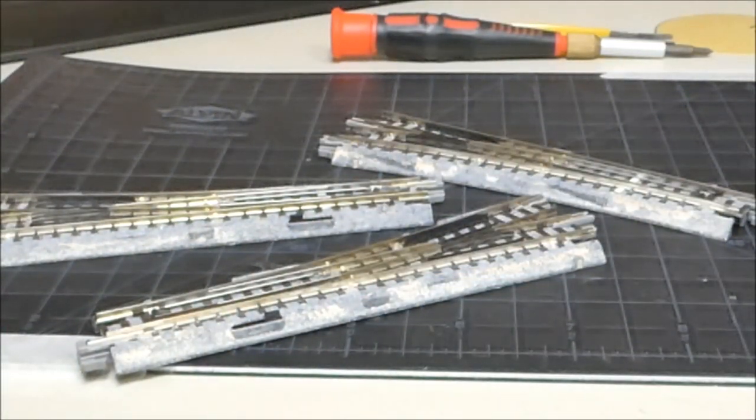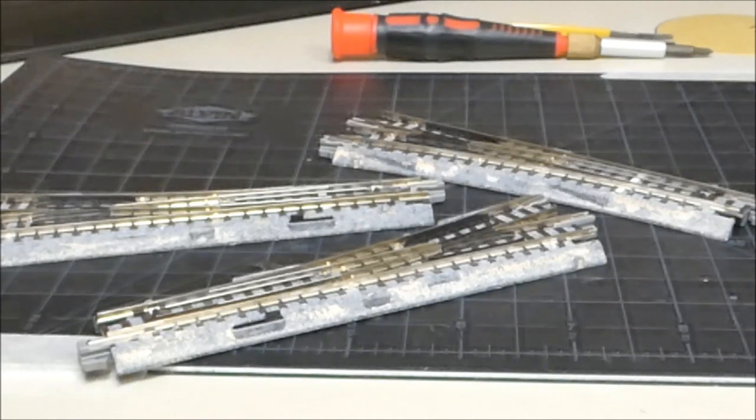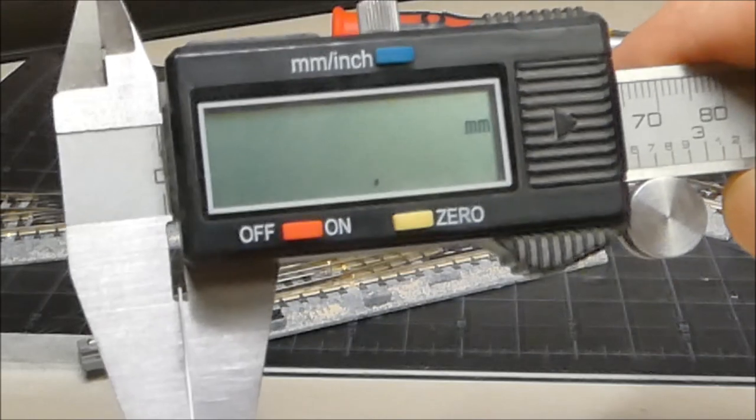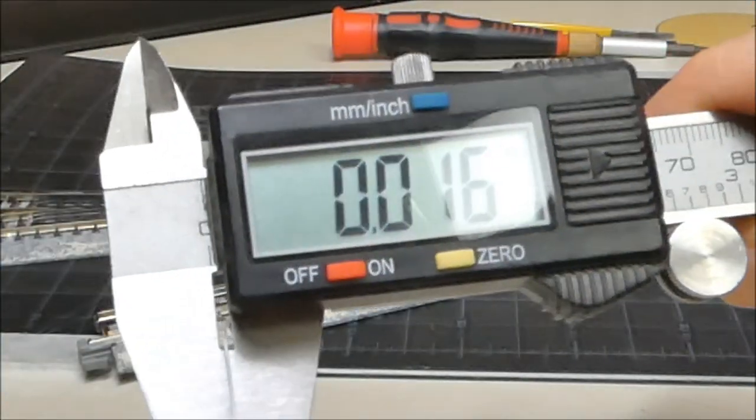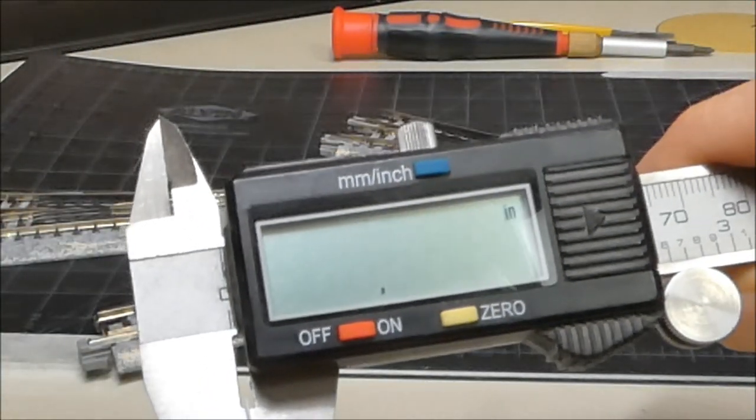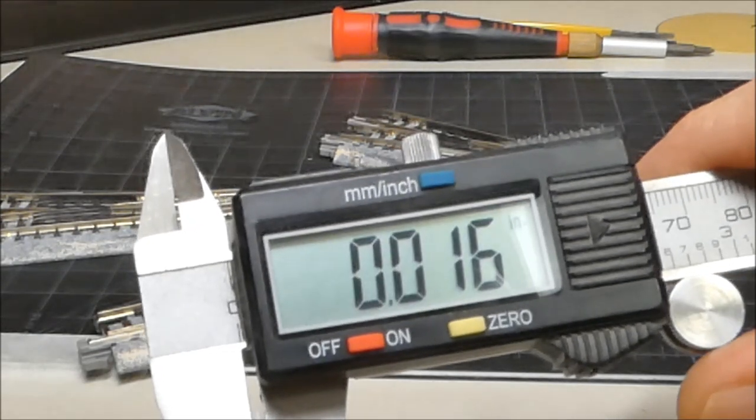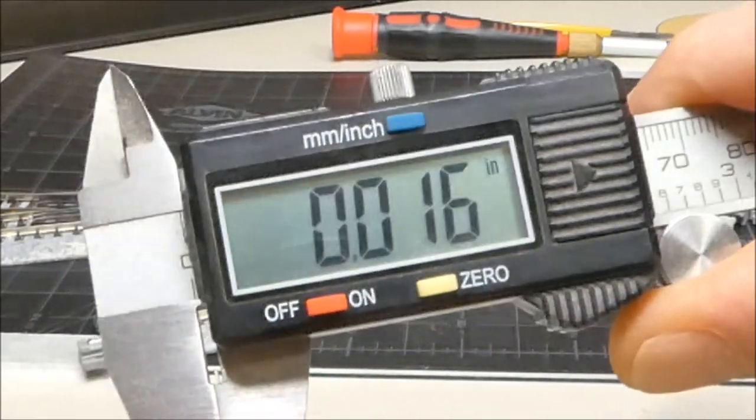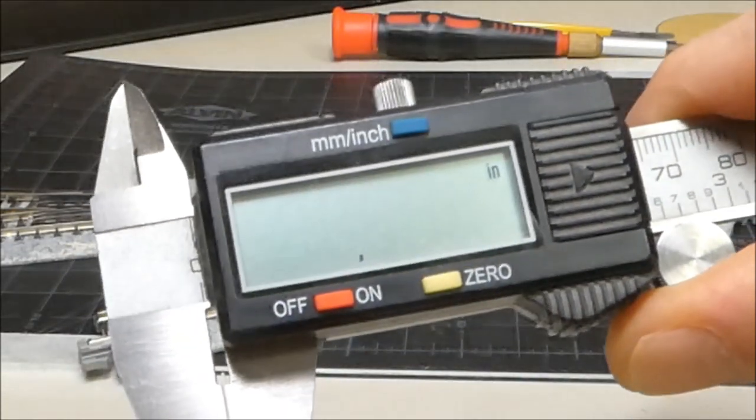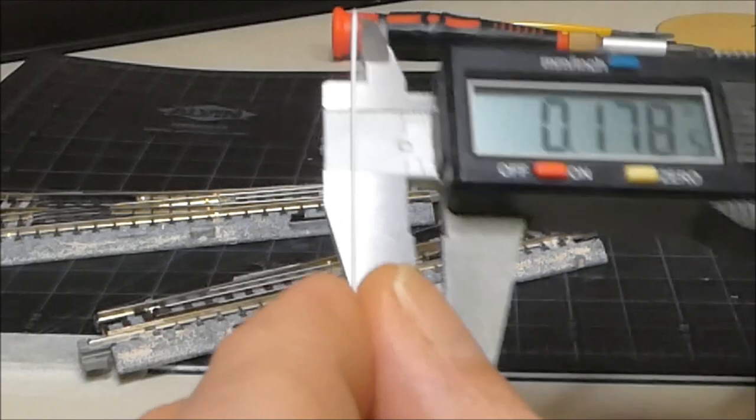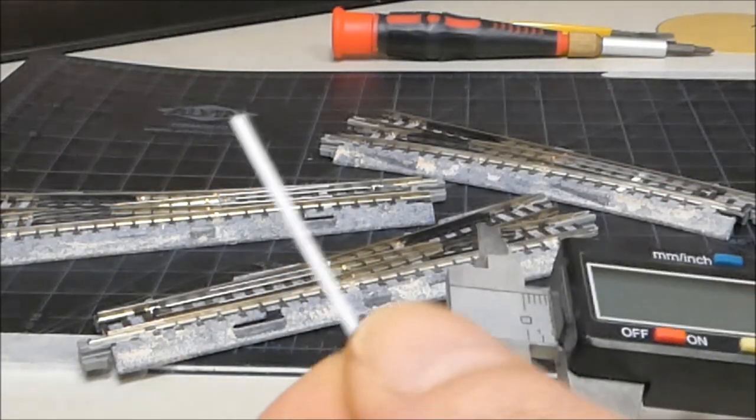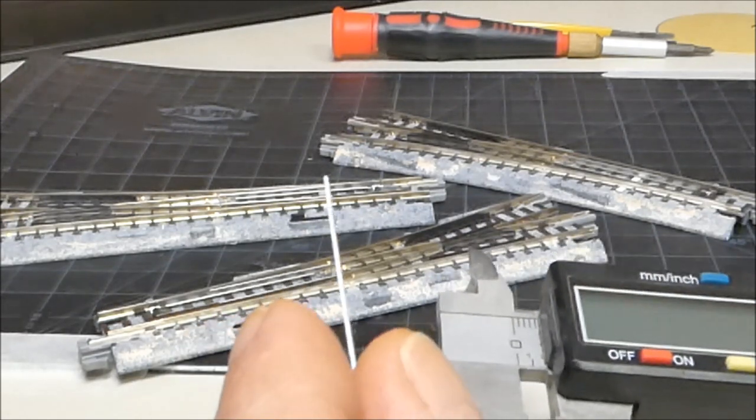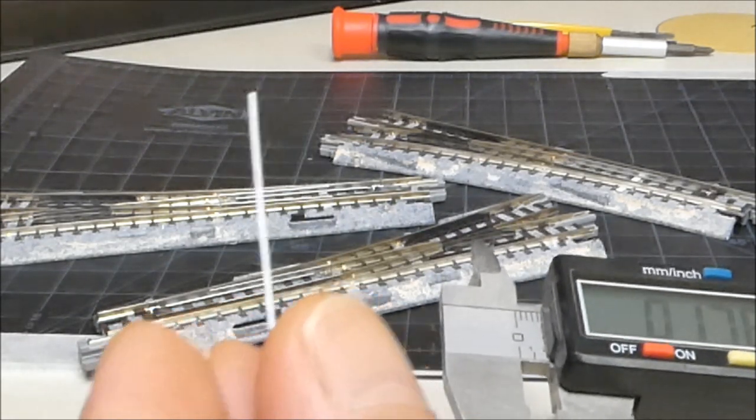I could measure it with micro calipers. It's about 0.4 millimeters, the styrene. That's 0.016 inches. I don't know, I generally work in metric. Anyway, it's very narrow and it's pretty typical. It's just that thin flexible styrene that is used quite a lot in scratch building.